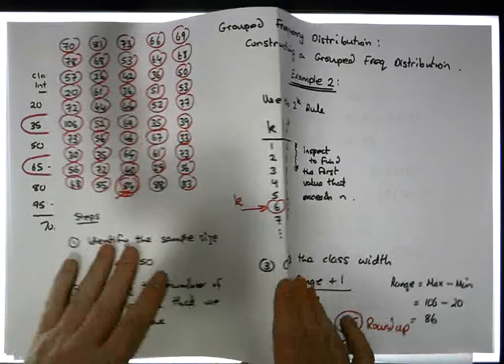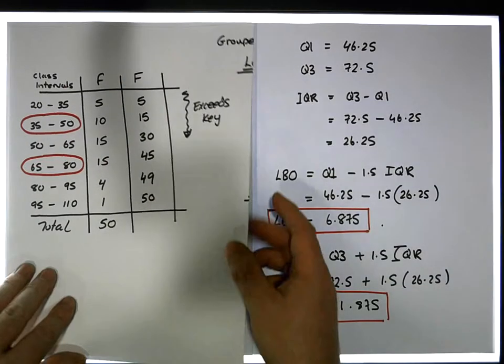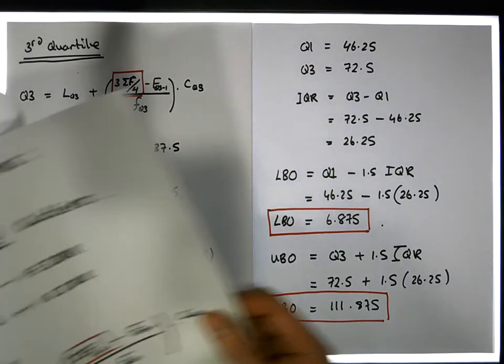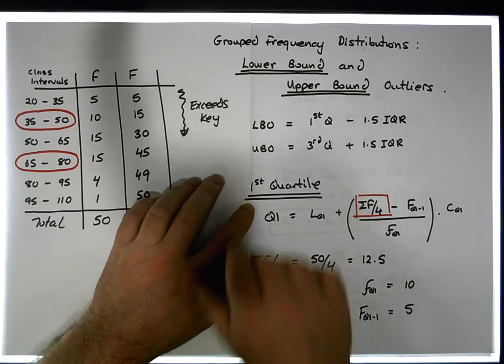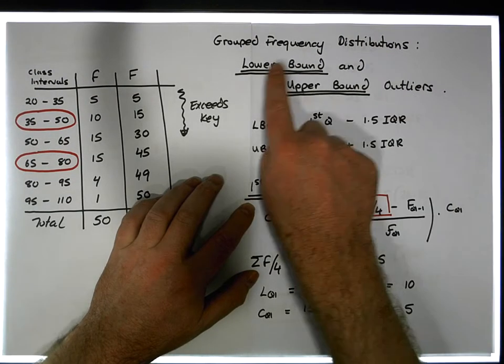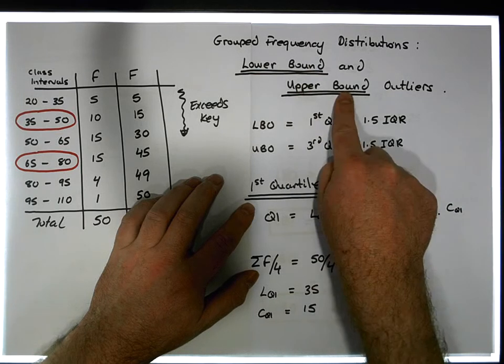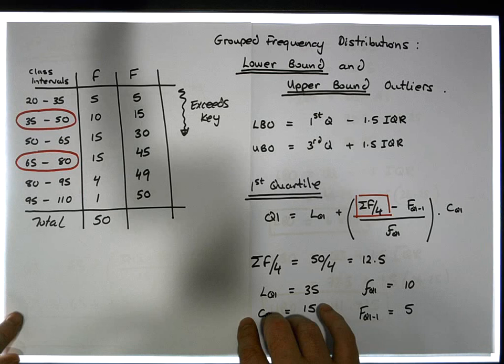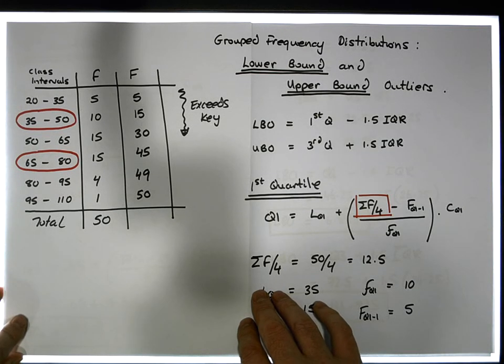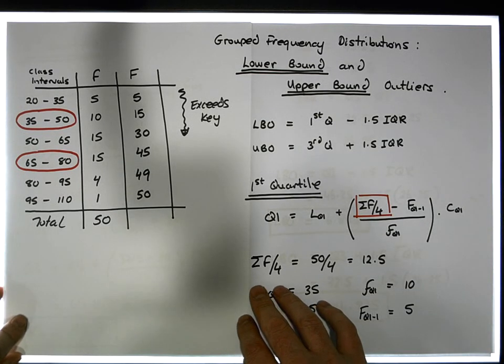So once again, guys, this is Jonathan Lambert with the Mathematics Development and Support Service at the National College of Ireland. And this video was dealing with group frequency distributions, how to calculate lower bound and upper bound outlier demarcation points. So I hope that this video was in some way intuitive, and more importantly, I actually hope that it was helpful for you. And thank you for watching. Bye-bye.